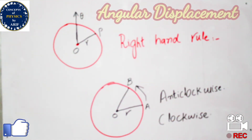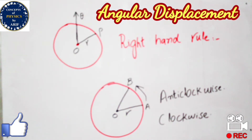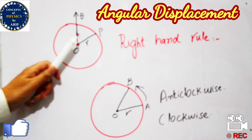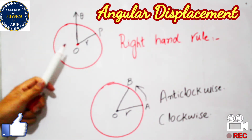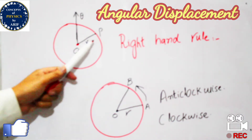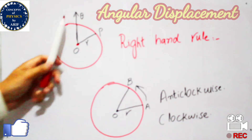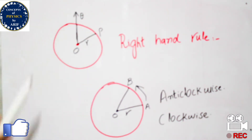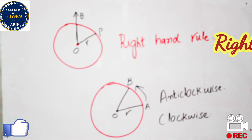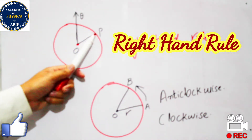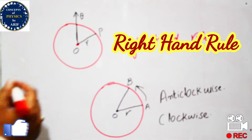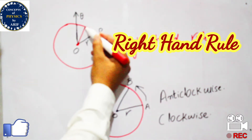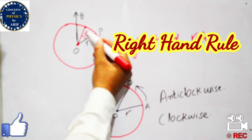Hi guys, welcome to my YouTube channel. In this video we will briefly discuss angular displacement. The word angular comes from rotation. For example, when a body of mass m having a radius r is moving in a circular path in the anticlockwise direction from point P to some other point, the distance covered by that body at some instant is known as angular displacement.